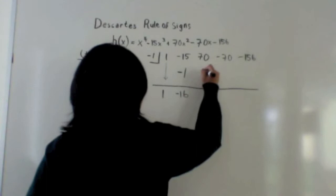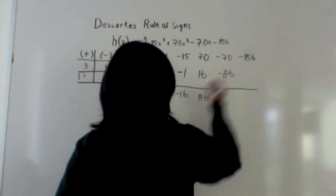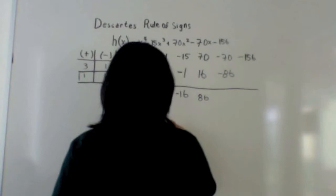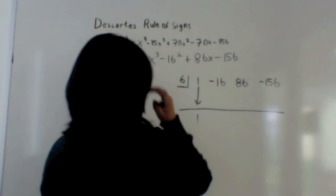Negative 16 times negative 1 is 16. 70 plus 16 is 86. Times negative 1 is negative 86. And negative 70 plus negative 86 gives you a remainder of zero. So after synthetic division you get x cubed minus 16x squared plus 86x minus 156.